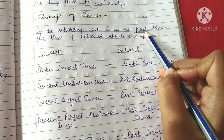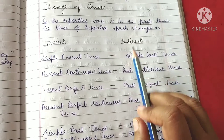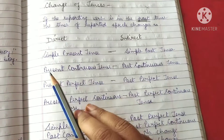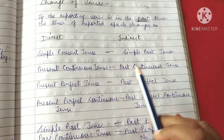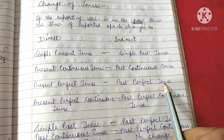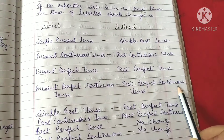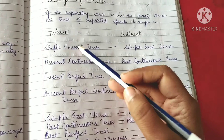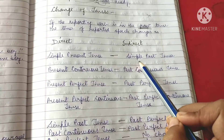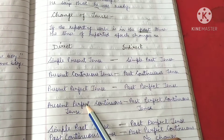If the reporting verb is in the past tense, then we change the tense. Let's see: if direct speech is in simple present tense, we change it into simple past tense. Present continuous tense changes into past continuous tense. Present perfect tense changes into past perfect tense. Present perfect continuous tense changes into past perfect continuous tense.